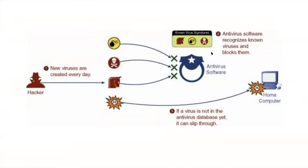Though, once it has been recognized and the antivirus software stops it, if a virus is not in the antivirus database yet, it can still slip through. You can see this arrow coming through into your home computer — there's a sad face because the virus is now on your computer. This shows how important it is to have antivirus software in order to prevent that.